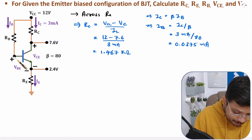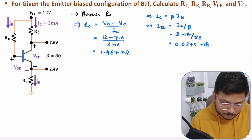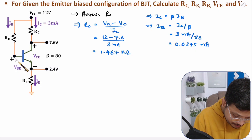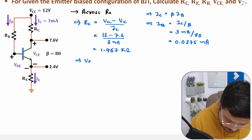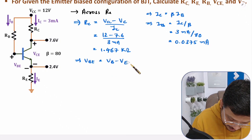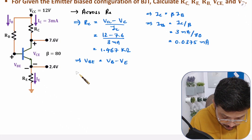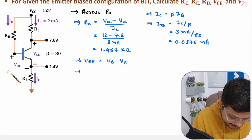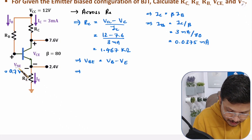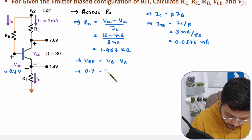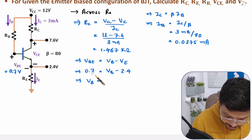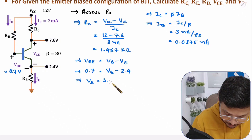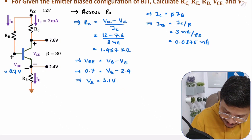To find VB, we use the relationship VBE = VB − VE. VBE for silicon is 0.7V and VE is given as 2.4V. So 0.7 = VB − 2.4, which gives VB = 0.7 + 2.4 = 3.1 volts. That is how one can calculate VB.